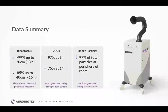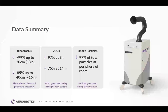To summarize the data, we looked at bioaerosol reduction with simulated intubation, VOC reduction with bone cement mixing, and smoke particulate reduction with electrocautery in a simulated procedure. For bioaerosols, we had greater than 99% reduction at 20 centimeters and 85% at 40 centimeters. For VOCs, we had a 97% reduction at 3 inches to the side and 8 inches above the bone cement mixing sample, and 75% at 14 inches by 14 inches. For smoke particles, we had a 97% reduction of total particles at the room periphery in a 25-minute simulated procedure.